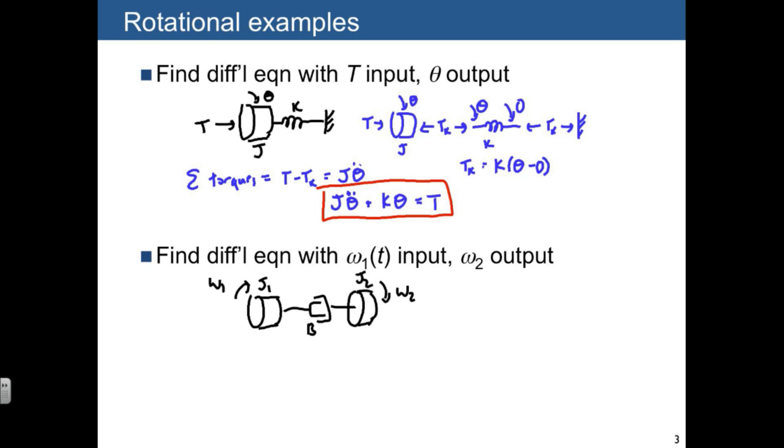If we draw our expanded free body diagram, we have J1. We have damping torques equal and opposite on the two sides.